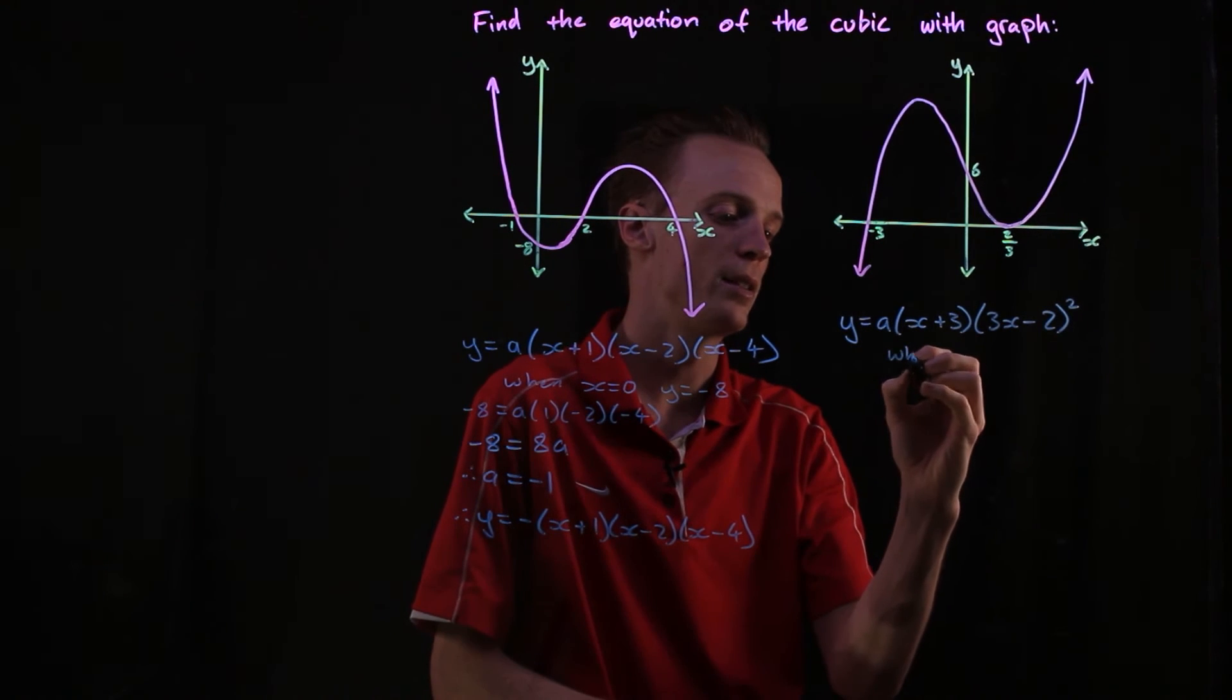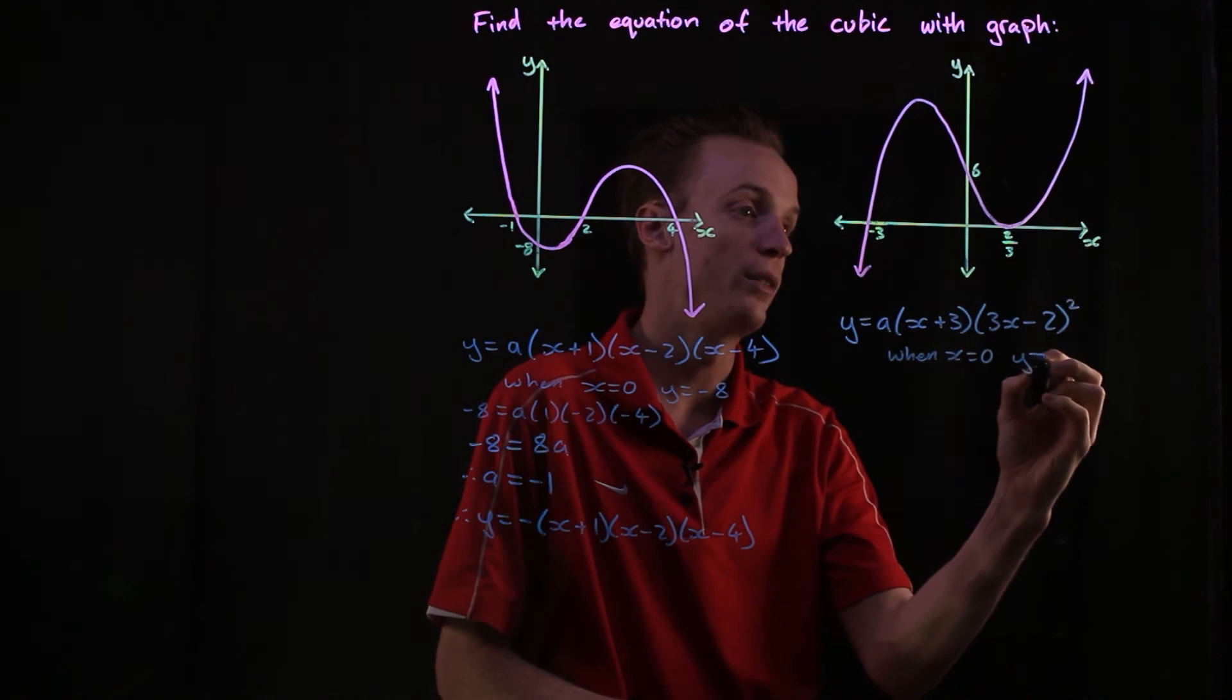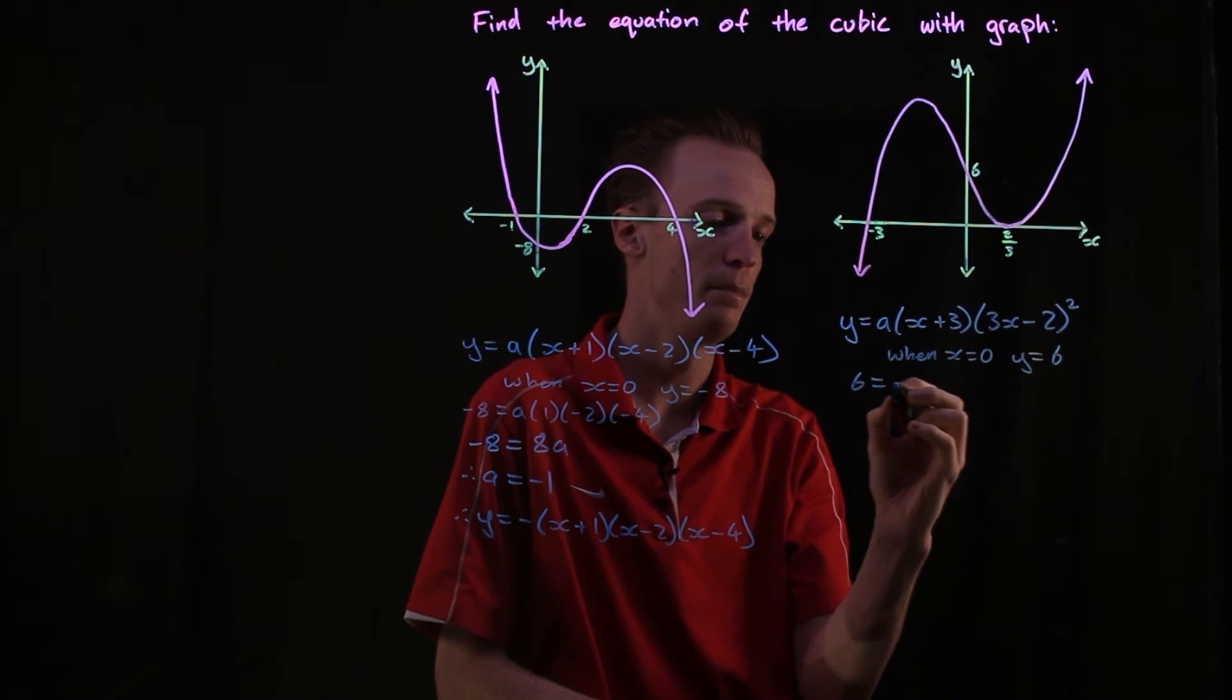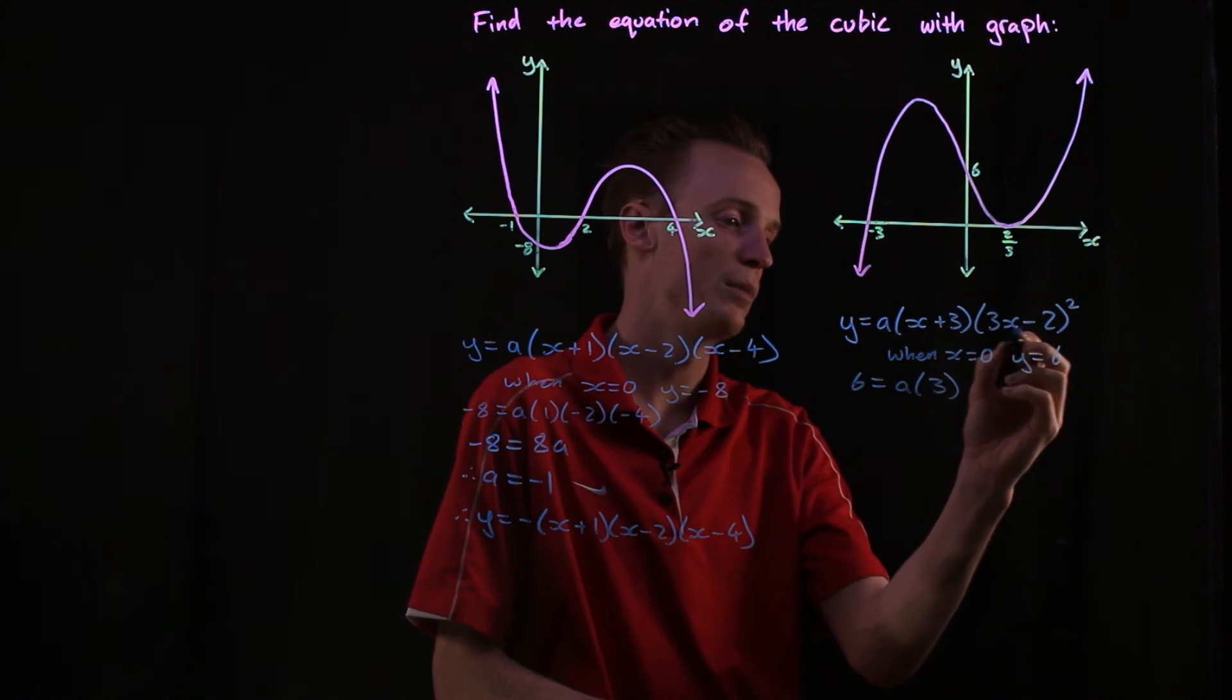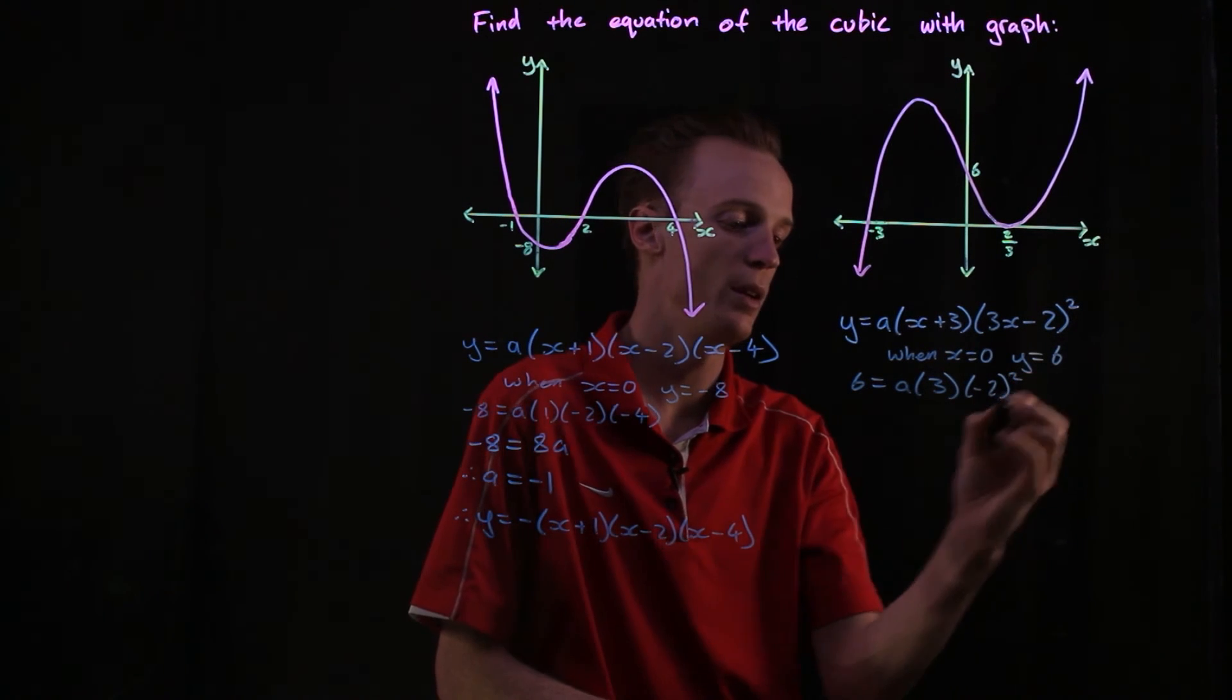I've got the y-intercept here, so that tells us that when x is equal to zero, our y is going to be equal to six. So we substitute that back in. Zero plus three is three. Three times zero is zero. So zero take two is negative two, and that's going to be squared.